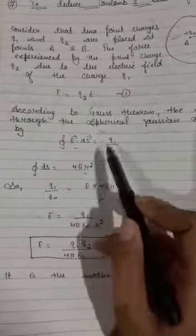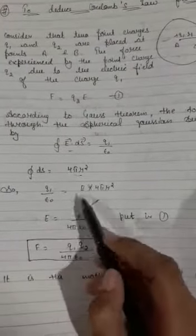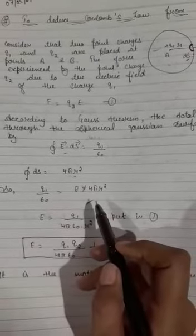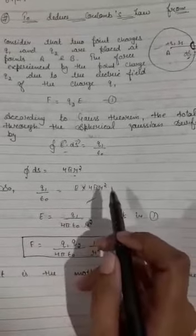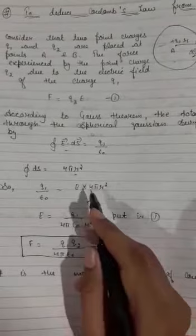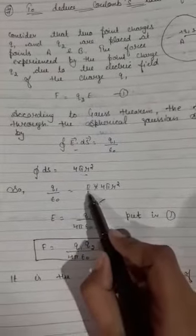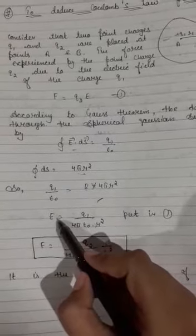Now you can see this thing: as I need to prove Coulomb's law, and we know that Coulomb's law is equals to 1/(4πε₀) q1q2/r². So what I will do? Firstly I will take the value of E, electric field. Electric field will be equals to q1/(4πε₀r²).